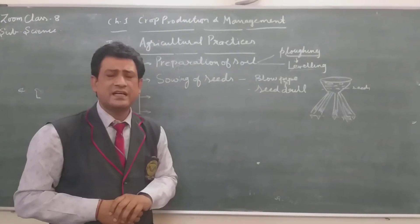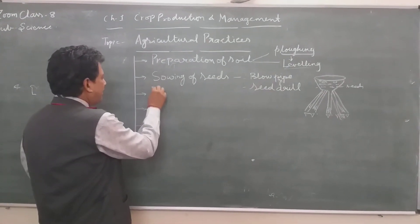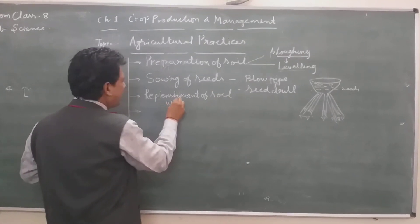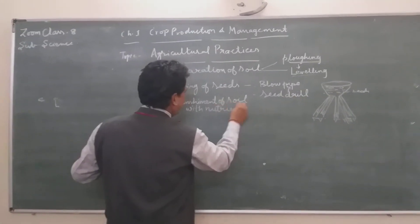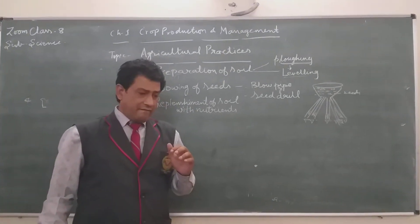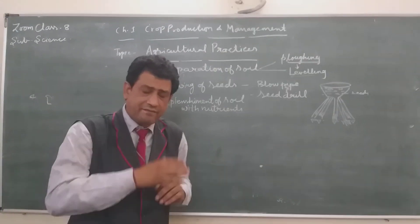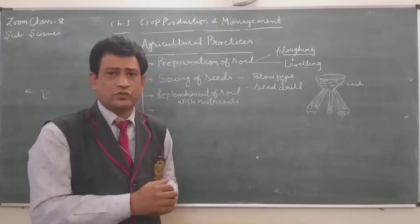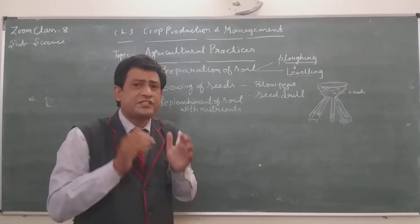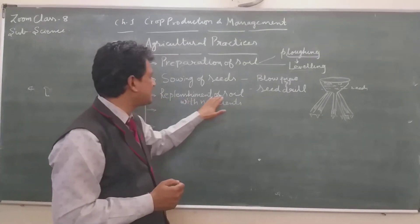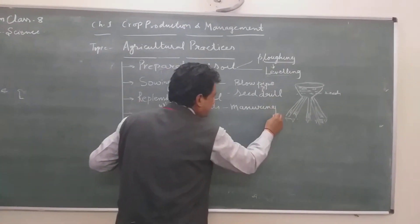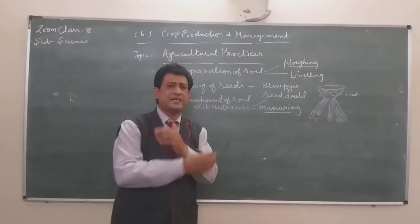The next step is Replenishment of soil with nutrients. When a farmer cuts crops, the nutrients in the soil become less because they have been utilized. So the soil needs to be enriched again — this step is known as replenishment of soil. For this purpose, we use the manuring method, which is an advanced method that replenishes the nutrients in the soil.